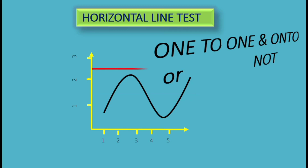In the second case, if the horizontal line does not meet the curve at all — it does not meet the curve — then it is also not a one-to-one function.